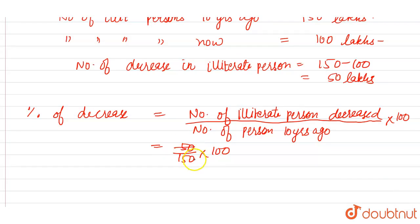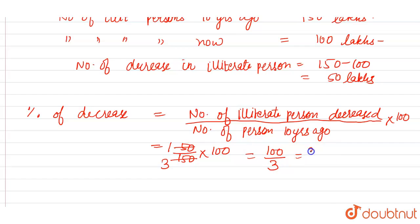Simplifying, 50 and 150 have a common factor of 50, so this becomes 1 over 3, multiplied by 100. The percentage decrease is 100 by 3, or we can say 33.33 percent. This is the required answer for this question.